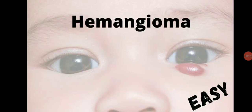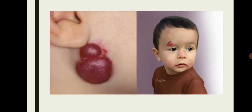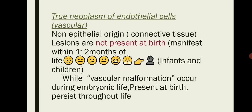Hello and welcome to my channel. Today we are going to dive into a very important and interesting topic: hemangioma. Here's how hemangioma looks — it is usually found in infants and children, mostly in head and neck areas. It is a true neoplasm of endothelial cells.